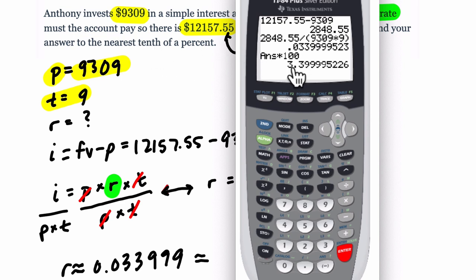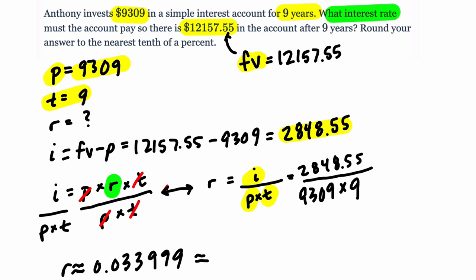And it wouldn't matter in this case. We wrote this out far enough. But I like to keep the exact value in the calculator and multiply that by 100, and then only round the last step. So that's going to be 3.4%. So an interest rate of 3.4% over nine years will get us this future value if we invest this principal.